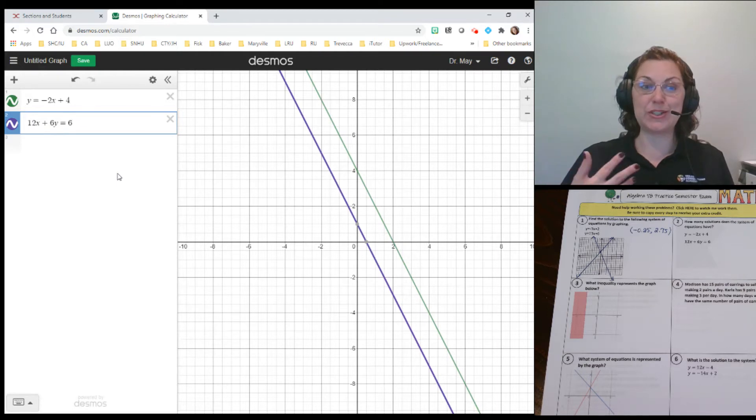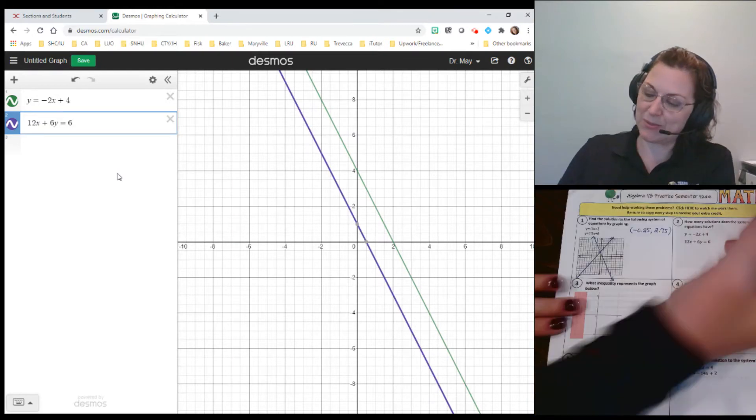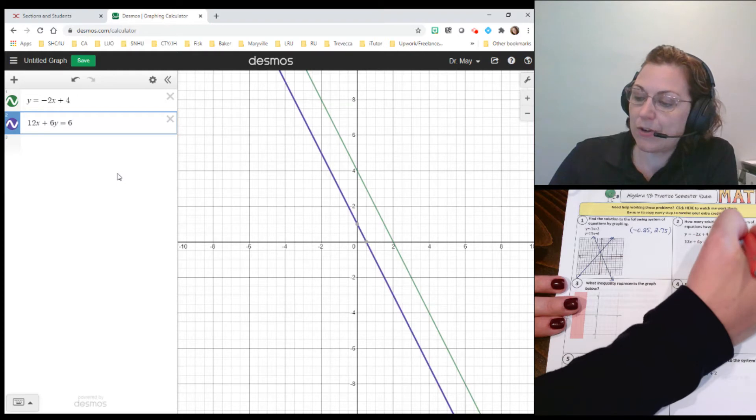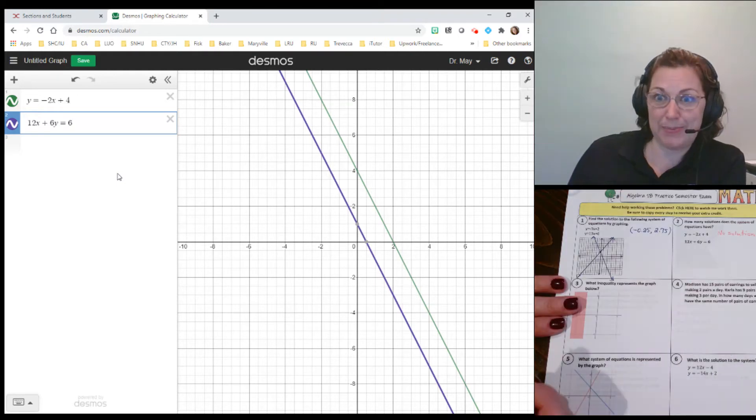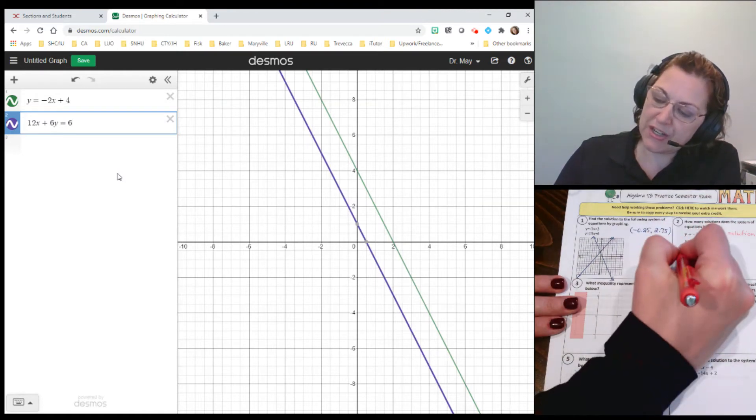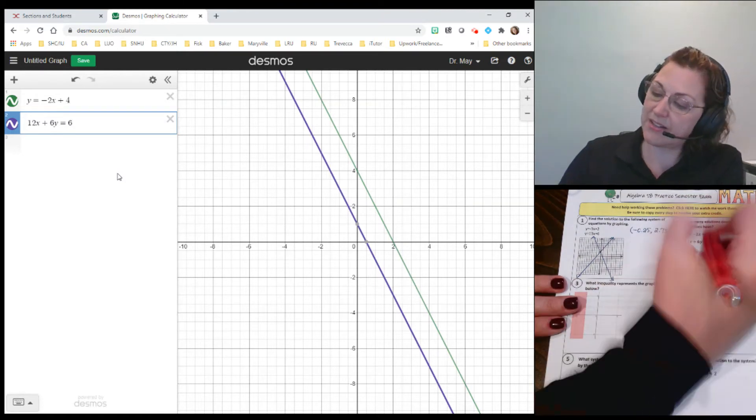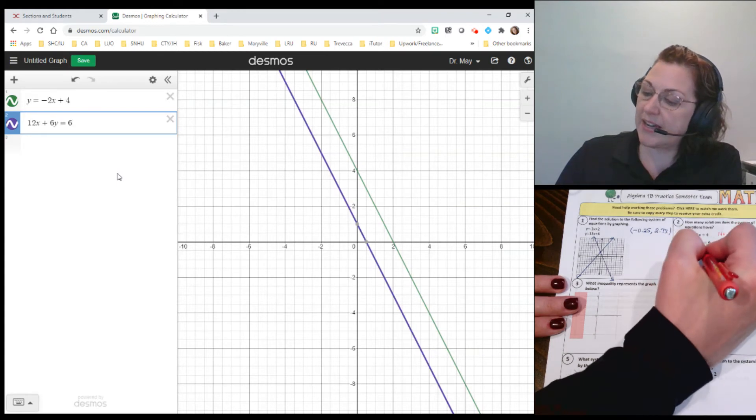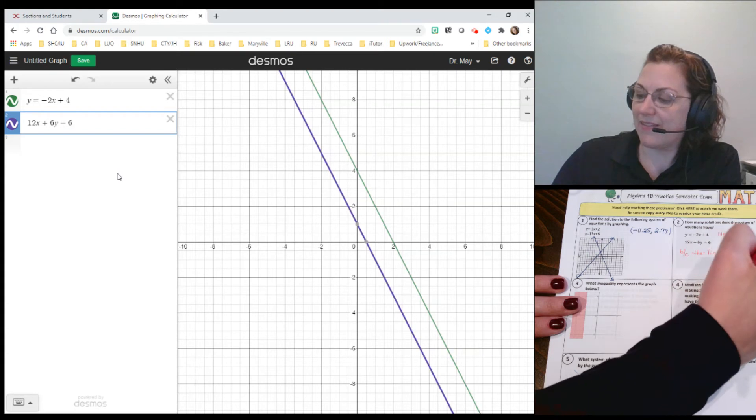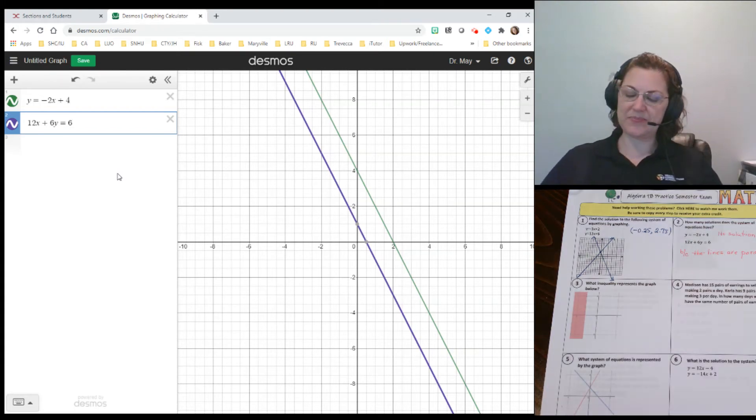They look to be the same. They look to be parallel. That's what we call that. So where are they going to intersect? Well, they're not. So that means we're going to have no solution. But remember, in order to get your extra credit, you've got to show steps or show explanation. So we want to write just a little bit of explanation. I'm going to use abbreviation: because the lines are parallel. That works real nice for us.